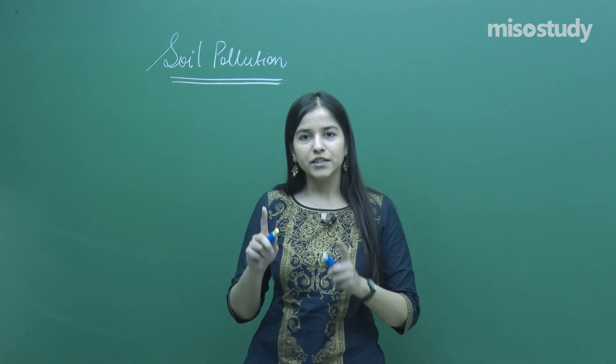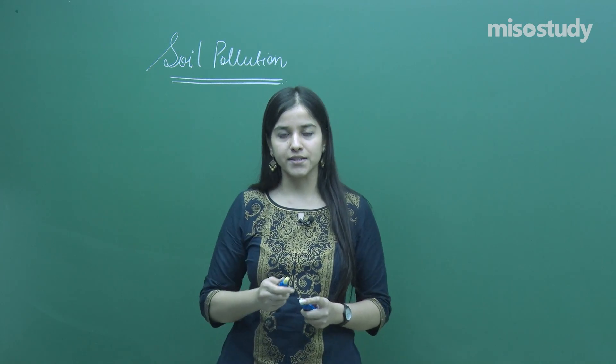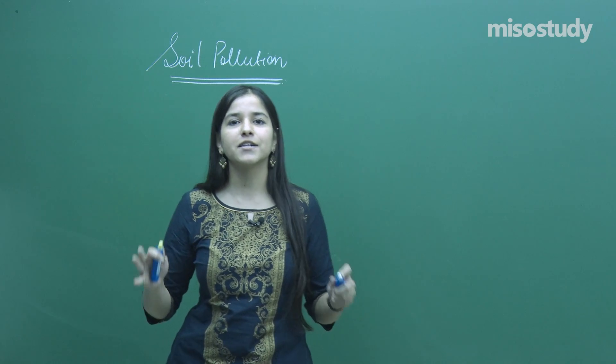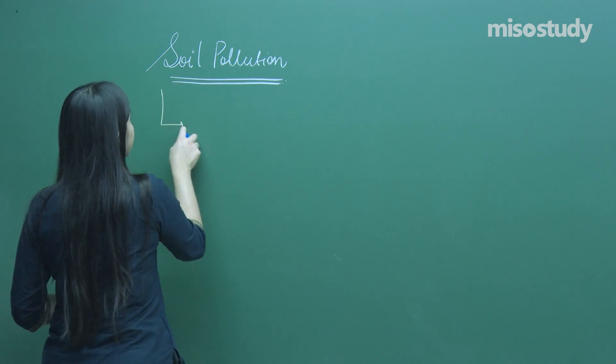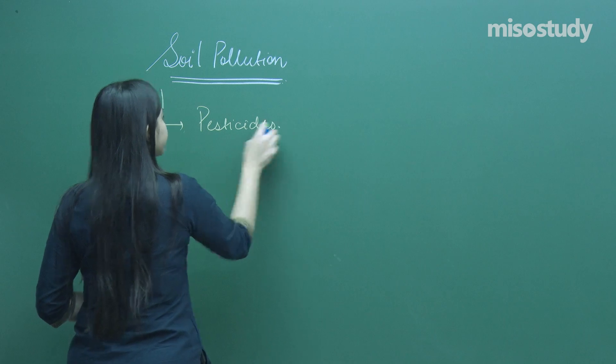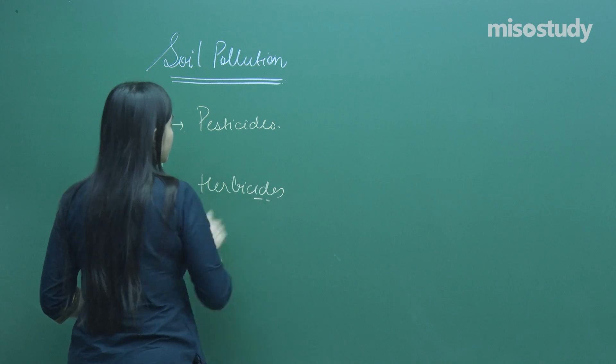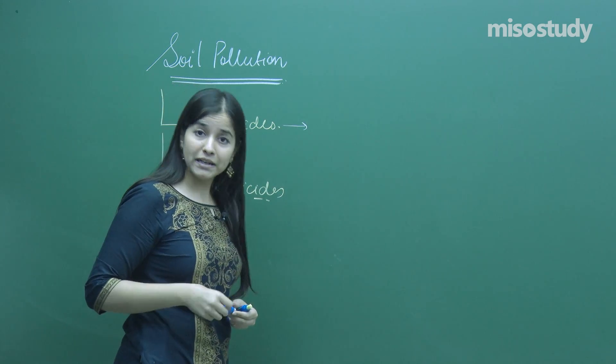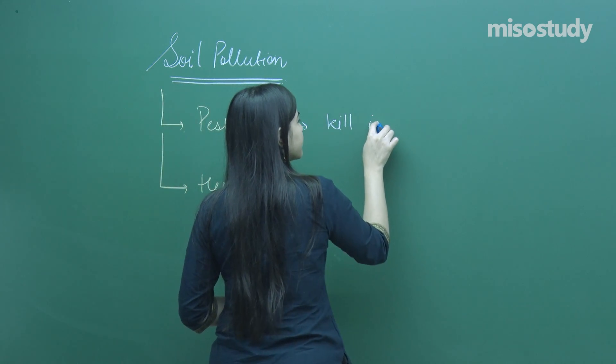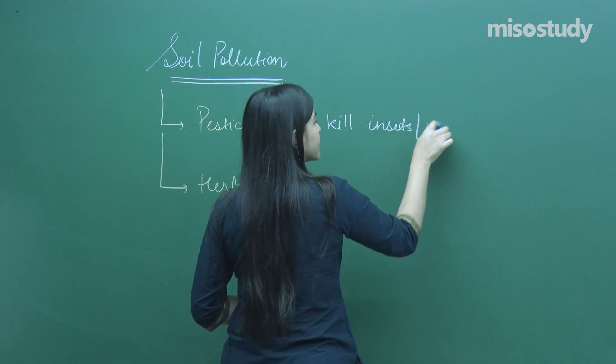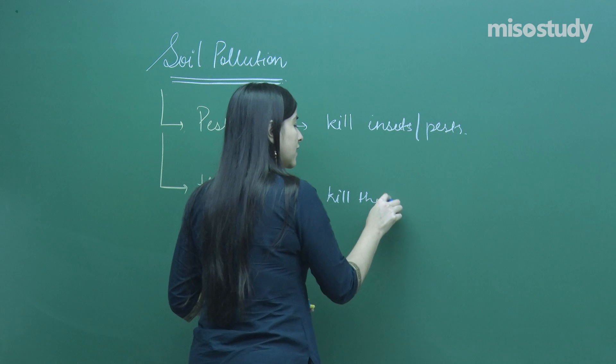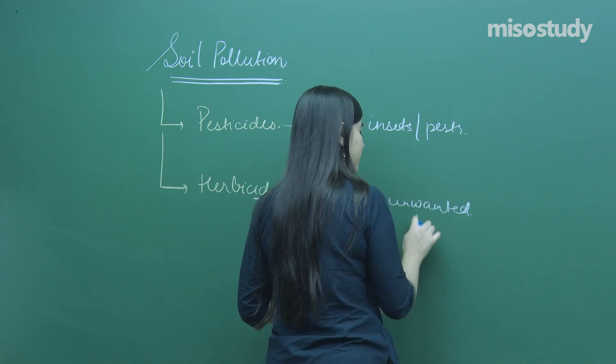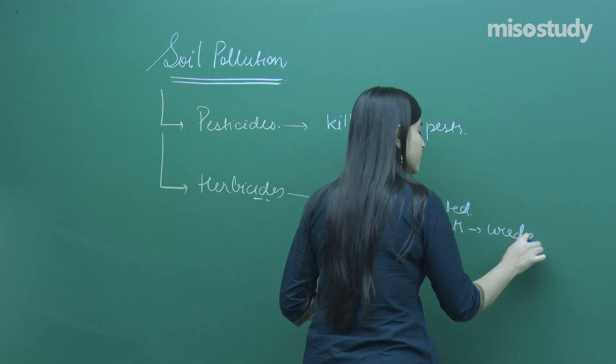In soil pollution, the first thing is the cultivation process, where different chemicals are sprayed onto plants to protect them from unwanted plants or pests. We will be dealing with pesticides and herbicides. Pesticides control the growth or kill insects and pests. Herbicides kill the unwanted plants known as weeds.